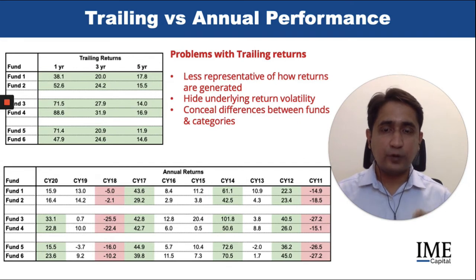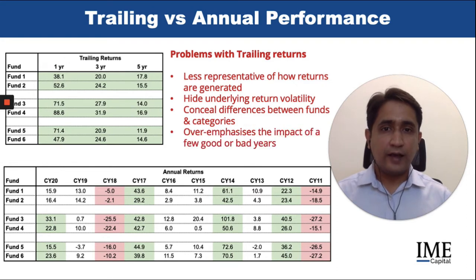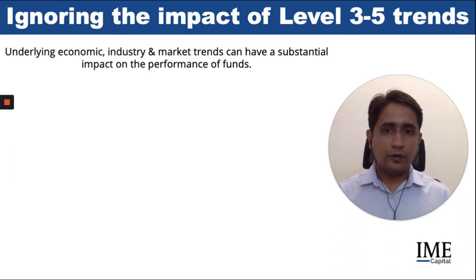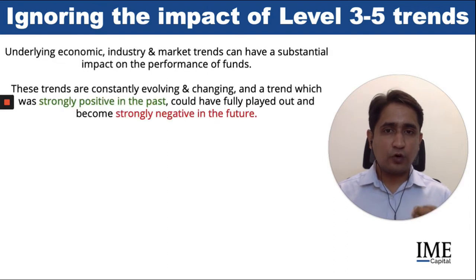The trailing return table conceals differences between funds and categories and how they perform across different market conditions. There's a big overemphasis on the impact of a few good or bad years in trailing returns, which doesn't happen when you look at annual returns. A common error relationship managers make while selecting funds is ignoring the impact of level three to five trends. Underlying economic, industry, and market trends have a substantial impact on the performance of funds. These trends are constantly evolving and a trend which is strongly positive in the past can change to become strongly negative in the future.